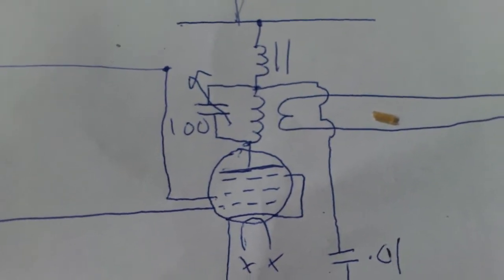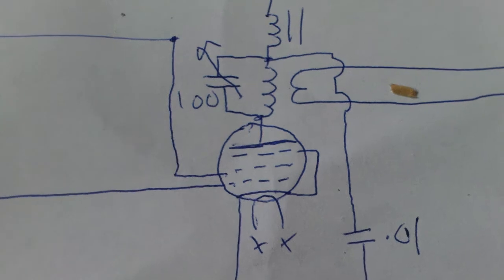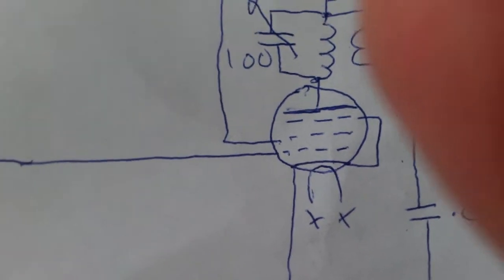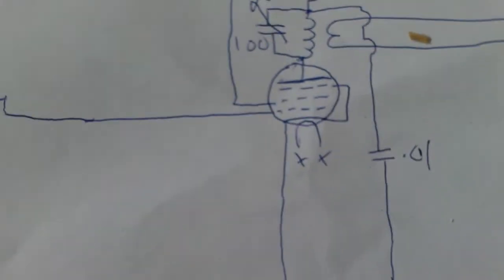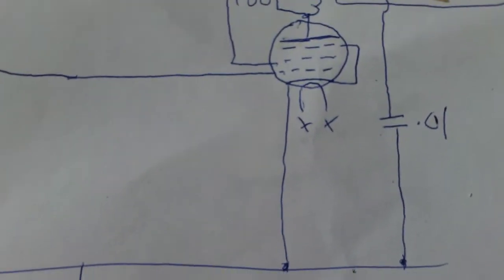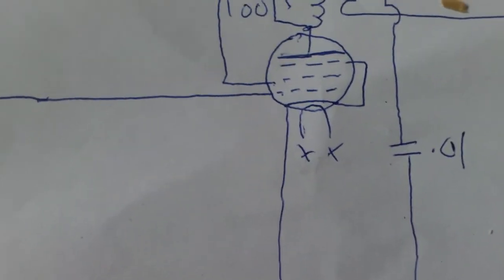This basically just drives the coil, and it is modulated by this green grid right there. So you can see this amplifier section is really simple. I mean, it's just a tube with different connections to it.